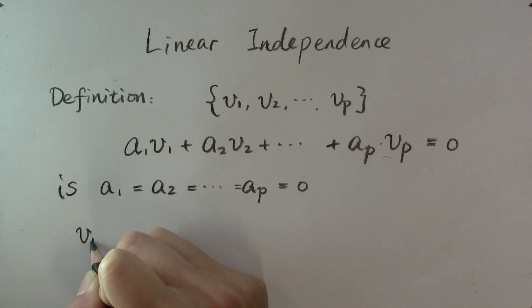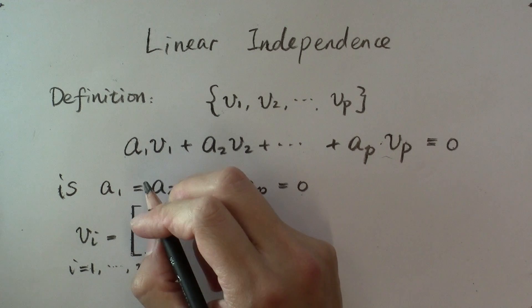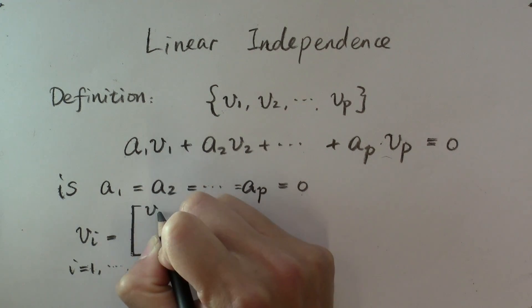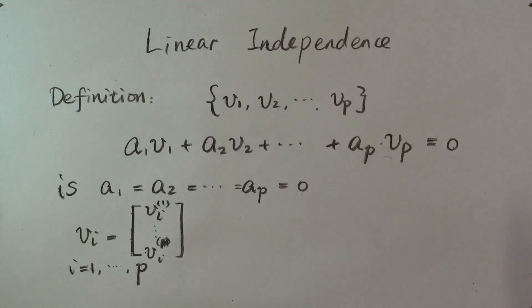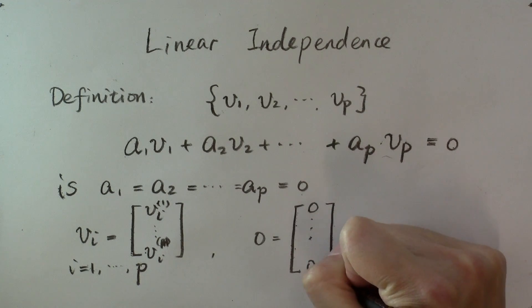Let's say each v_i, where i can take any values between 1 and p, is an n-dimensional vector, then the zero vector here is a vector that has m components that are all zero.